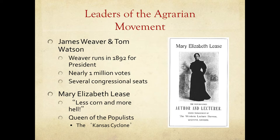Kansas became a major center of the Populist Party. James Weaver and Tom Watson were the first two big leaders. Weaver, a former Union general, ran for president as a Populist in 1892, and nearly one million individuals voted for the party. They won several seats in Congress, mostly in the House of Representatives — a major accomplishment for a third party that had only existed for about two years.